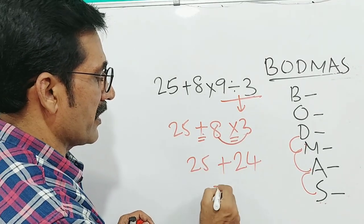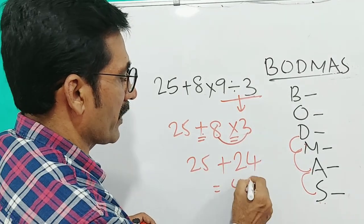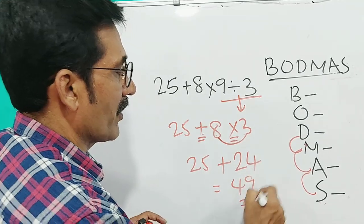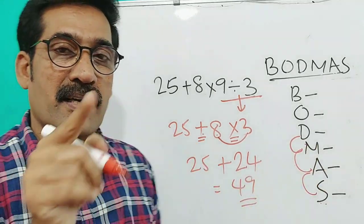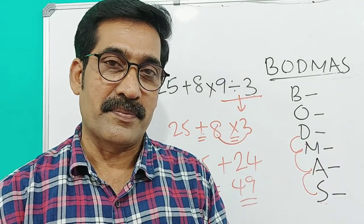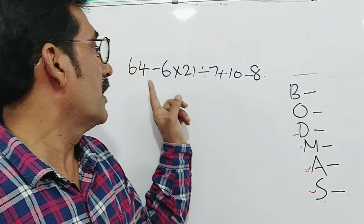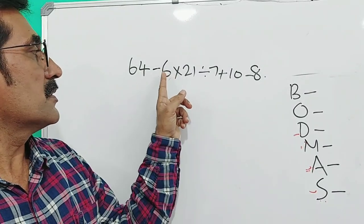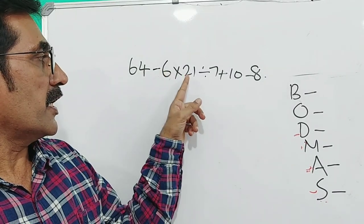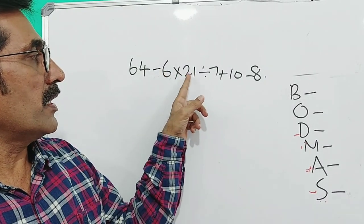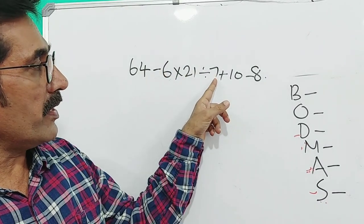So 8 into 3 is 24, and 24 plus 25 is equal to 49. So 49 is the right answer.